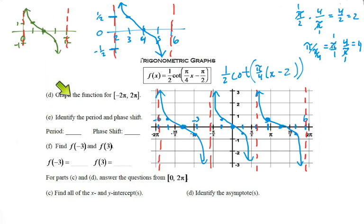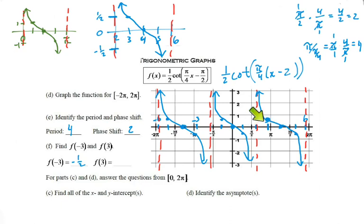The problem says: graph it — done; identify the period and phase shift — also done. The period is four and the phase shift is positive two, meaning we shifted right two. Now find f of negative three: looking at the graph, negative three gives us negative one-half. Find f of three: that gives us positive one-half.